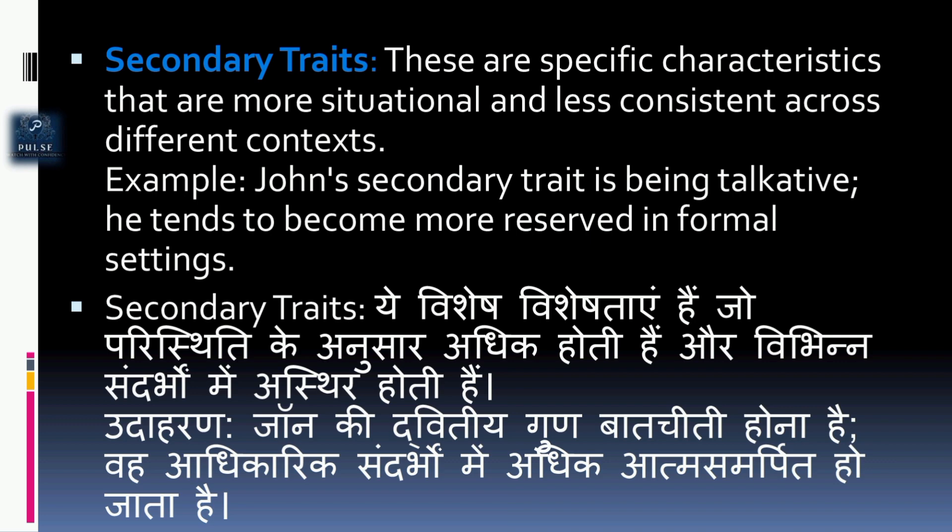Secondary Traits: ये विशेष विशेषताएं हैं जो परिस्थिति के अनुसार अधिक होती हैं और विभिन्न संदर्भों में अस्थिर होती हैं। उदाहरण: John की द्वितीय गुण बातचीती होना है — वह अधिकारिक संदर्भों में अधिक आत्म-समर्पित हो जाता है।